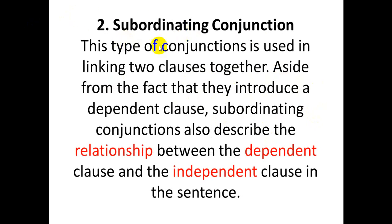The second type is subordinating conjunction. A subordinating conjunction is used to link two clauses together. Aside from introducing a dependent clause, subordinating conjunctions also describe the relationship between the dependent clause and the independent clause. In coordinating conjunctions, both clauses are independent; here, one clause is dependent and one is independent.